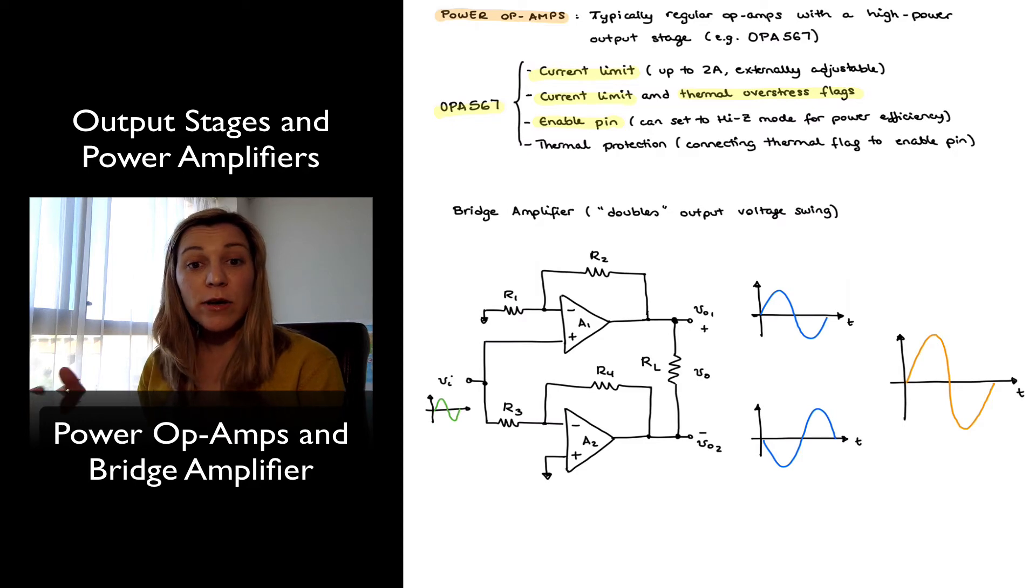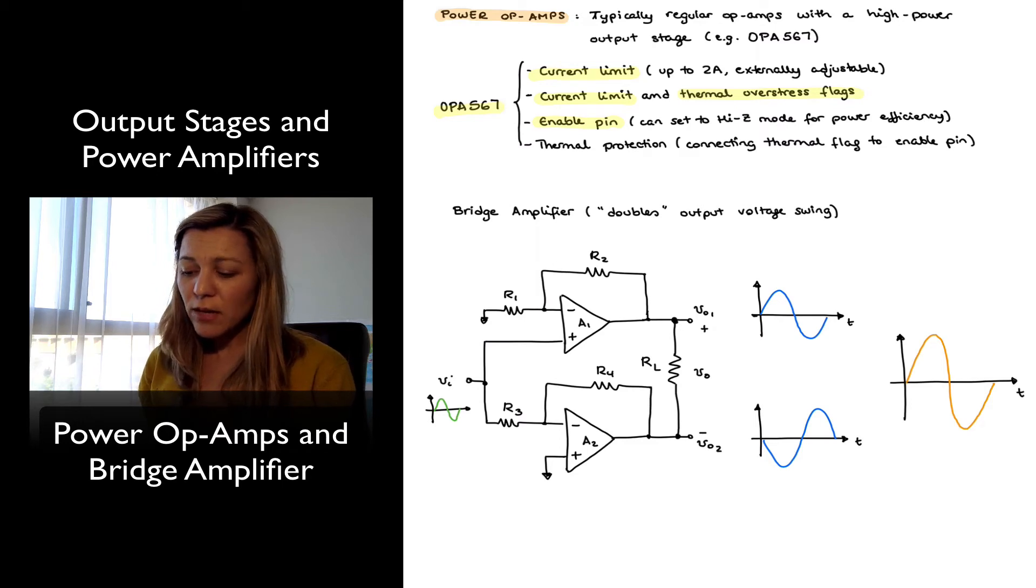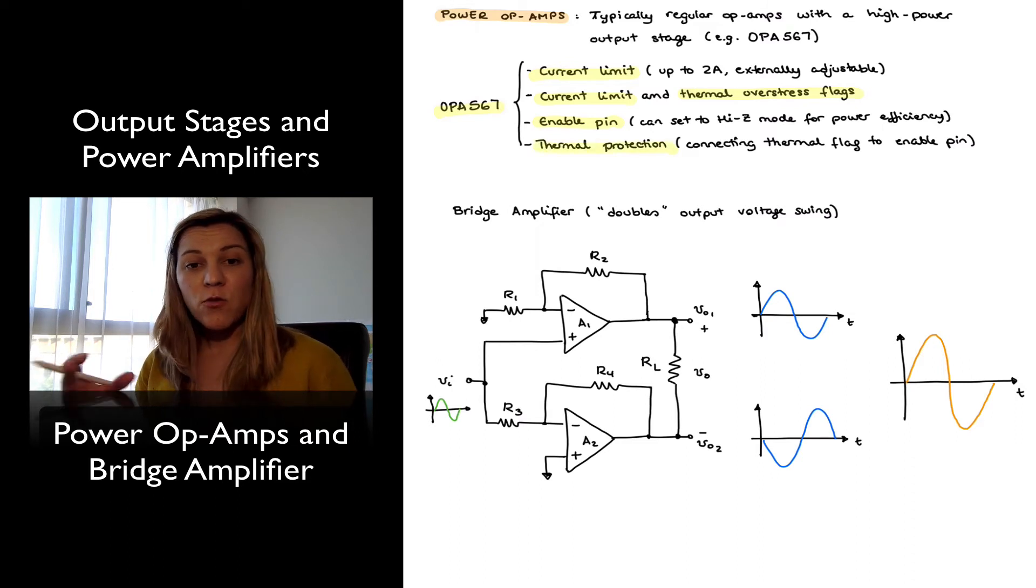That way we will avoid the quiescent current dissipation. But in the case of the OPA567, the enable pin can also be connected to the thermal flag to provide thermal protection. Essentially, when the thermal flag pin flags, it can be fed back into the enable pin in order to disable the op-amp.